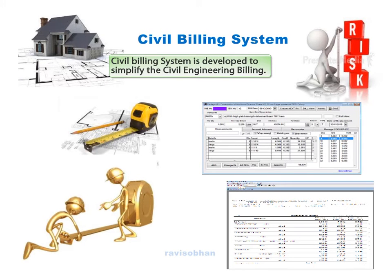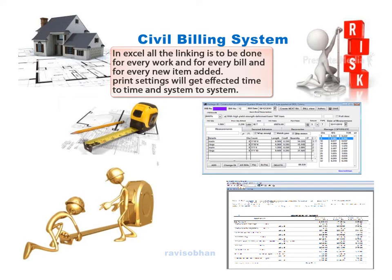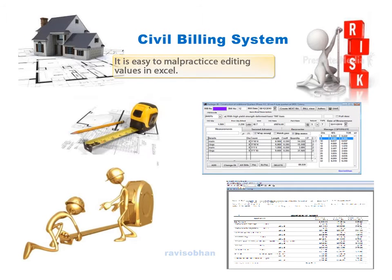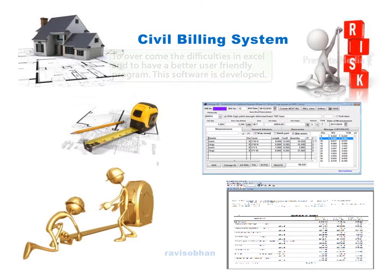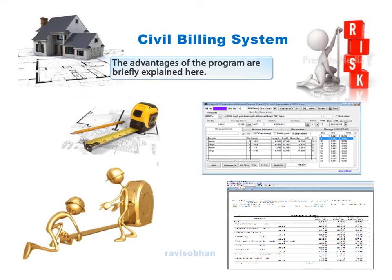The Civil Billing System is developed to simplify Civil Engineering billing. Currently, most Civil Engineering staff are using Excel for billing operations. In Excel, all linking has to be done for every work, every bill, and every new item added. Print settings get affected from system to system. It is easy to malpractice by editing values in Excel. To overcome these difficulties and to have a better user-friendly program, this software is developed. The advantages of the program are briefly explained here.